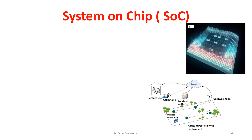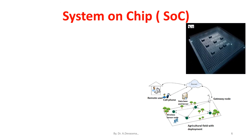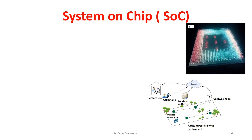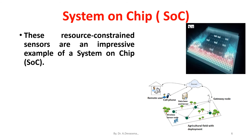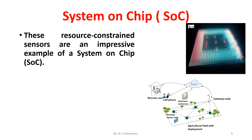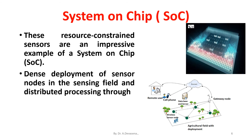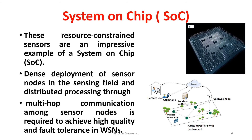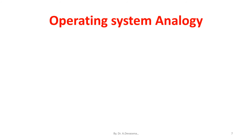These resource-constrained sensors are an impressive example of a system-on-chip, that is SoC. Dense deployment of sensor nodes in the sensing field and distributed processing through multi-hop communication among sensor nodes is required to achieve high quality and fault tolerance in wireless sensor networks.